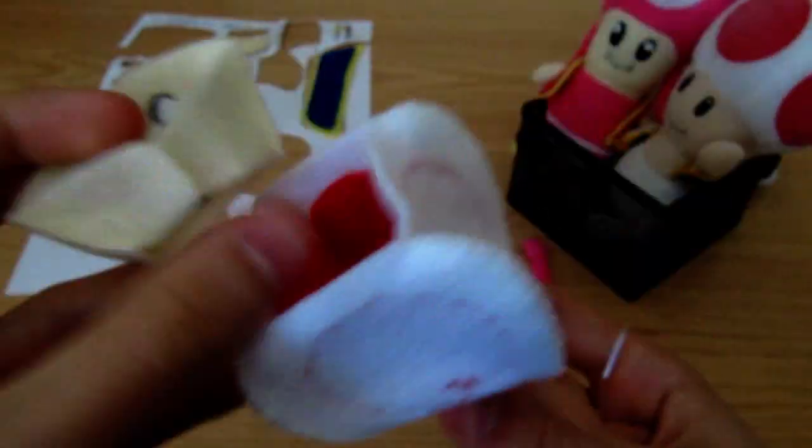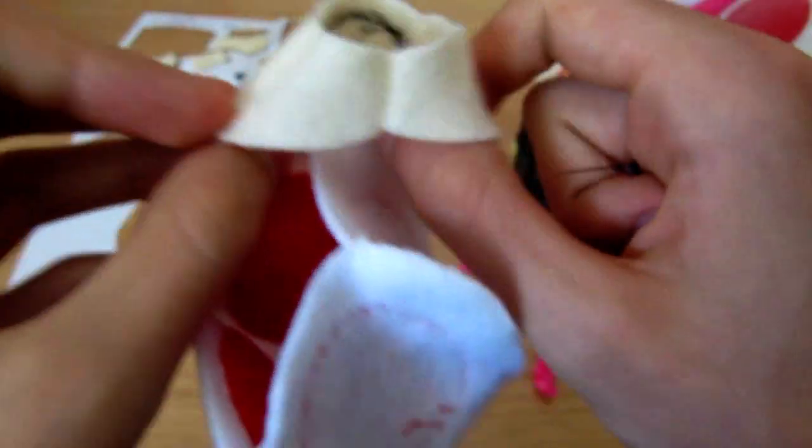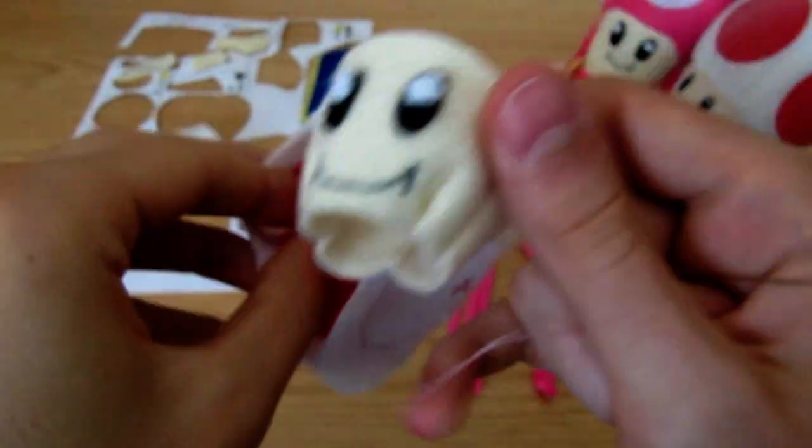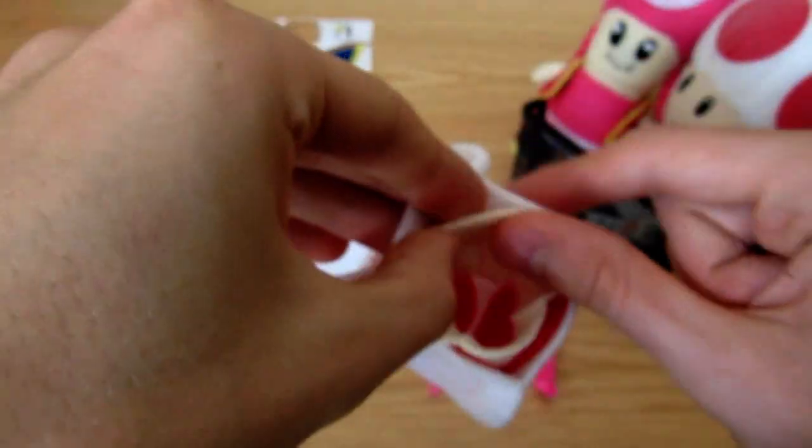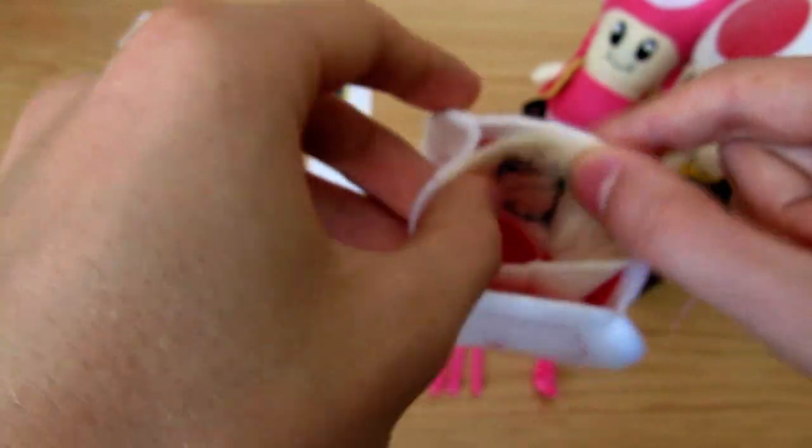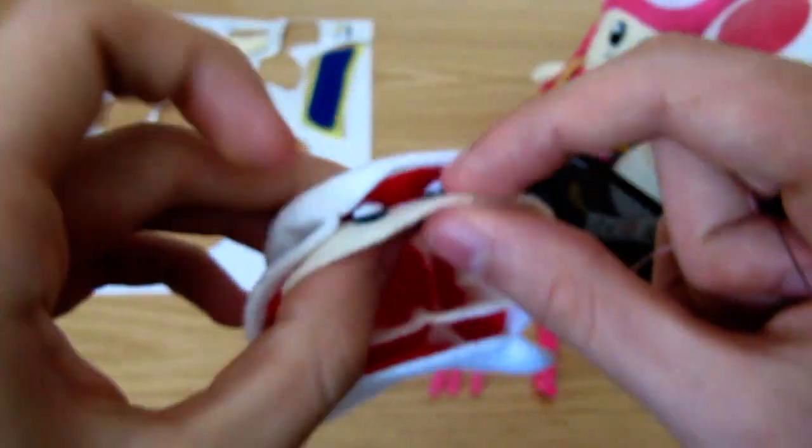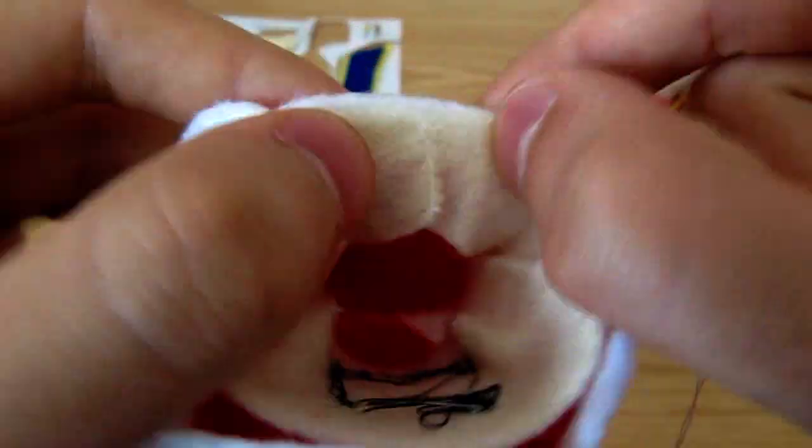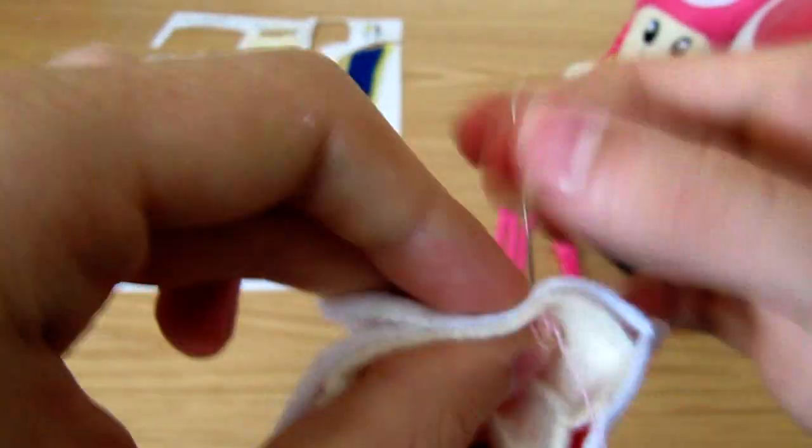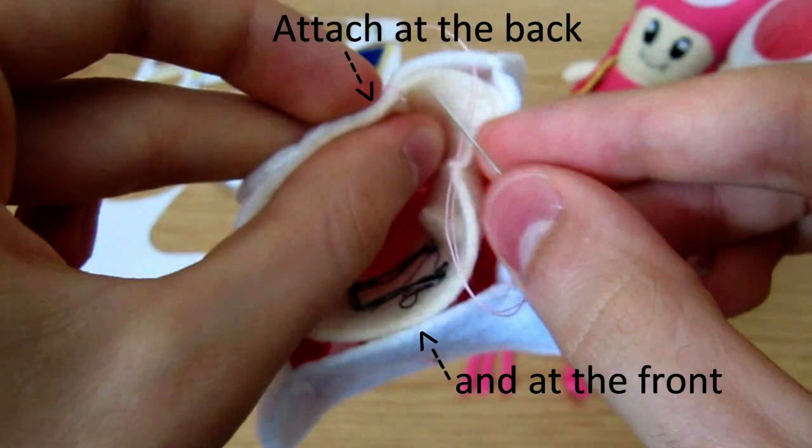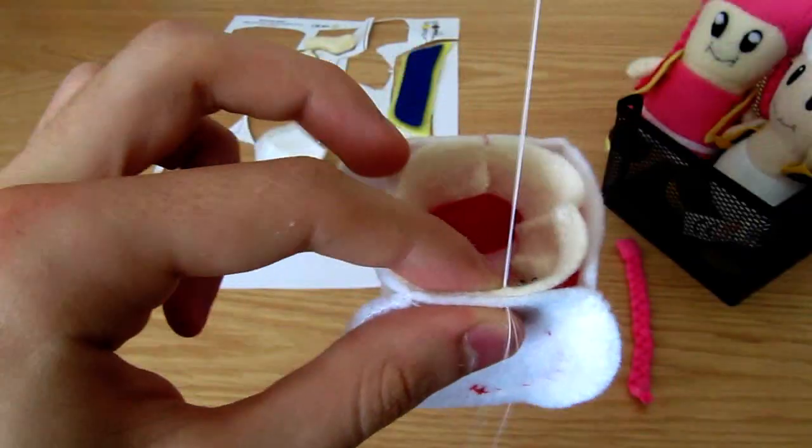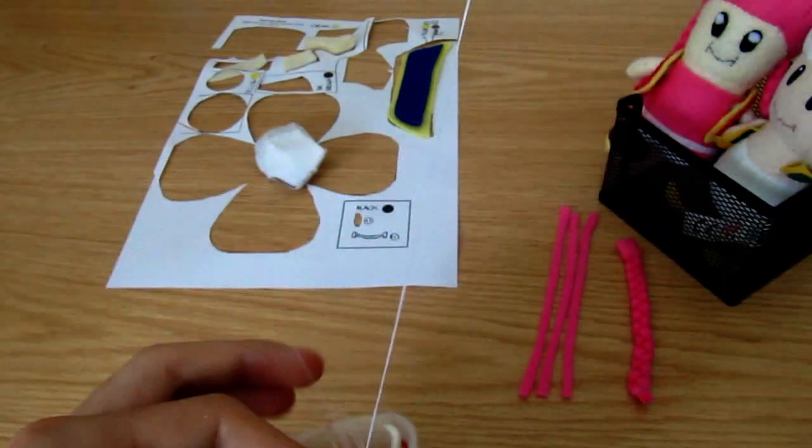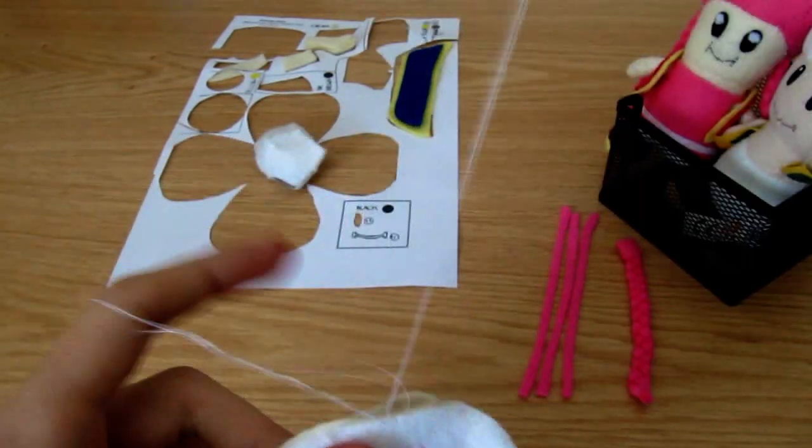Now take the cap and head pieces. Turn the head the right way out, and put it inside the cap, mouth first. Then position it so the center of the face is at the center of one of the cap pieces. Attach it with a few loops of white thread at the middle of the front, and at the back. Then continue around the entire edge just like this.